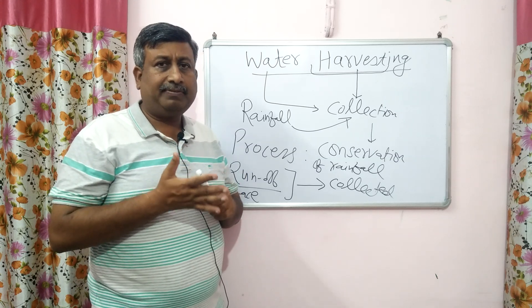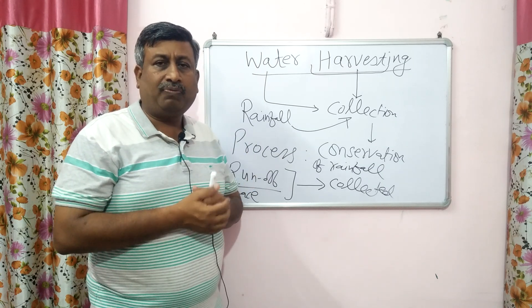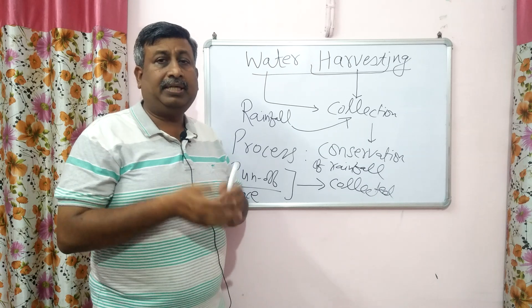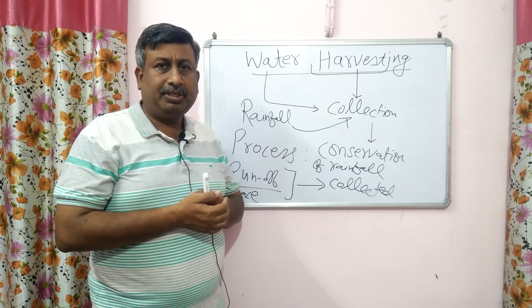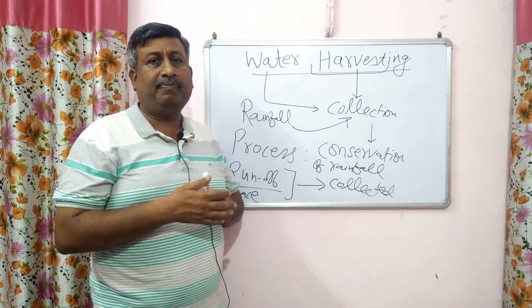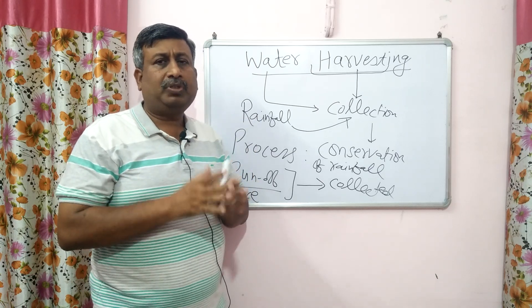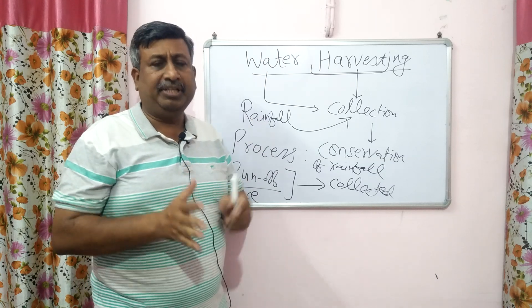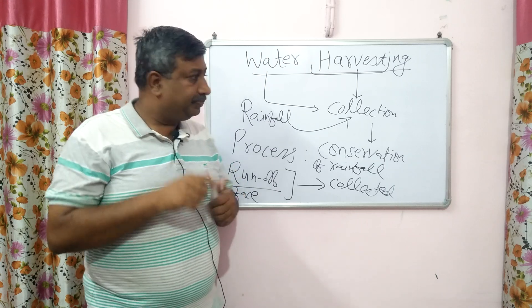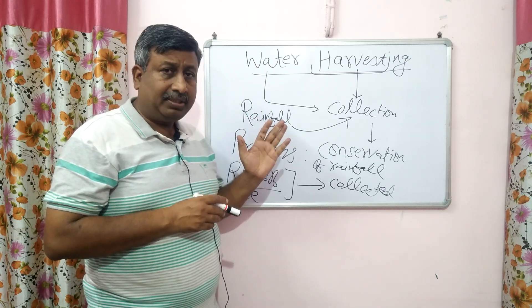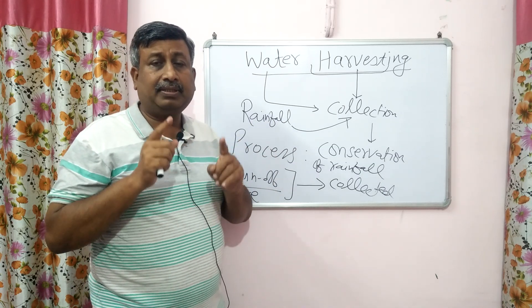First, water is collected at a particular place. Then it is stored for a long time — one month, two months, three months. Then it is conserved for future use — maybe for irrigation, maybe for drinking, maybe for household use, maybe for industry or any other purpose. The main purpose of water harvesting is irrigation. So water harvesting is the process of collection, storage, and conservation of rainfall by collecting surface runoff.